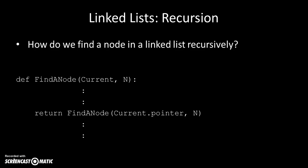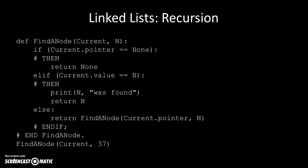How do we find a node? Our method is called find_a_node. It takes in current.pointer and the value we're looking for. If we've reached the end of the list, return nothing. If we've found the value, say we've found it; else keep returning find_a_node(current.pointer).